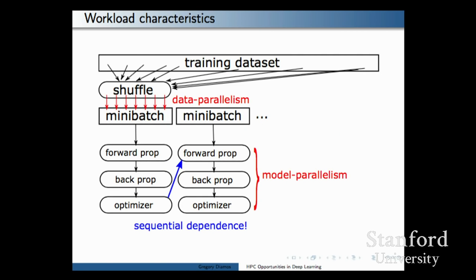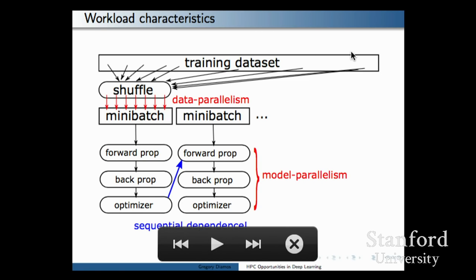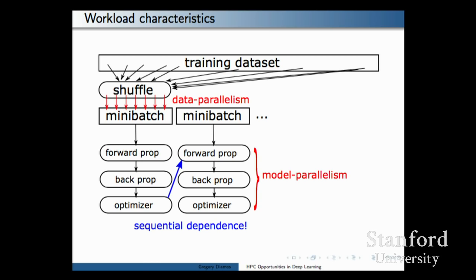To describe what model training looks like: we have a huge opportunity to improve performance. The first step is developing a better understanding of the workload. At the top, we have a training dataset. The size of these datasets varies by application — usually not as big as you might find in other domains, maybe a couple of terabytes rather than 10 petabytes. It depends on the representation: images are the least compressed, speech is more compressed, and language is the most compressed.